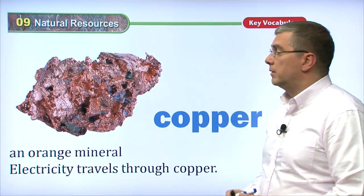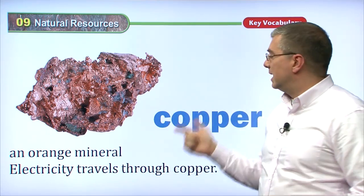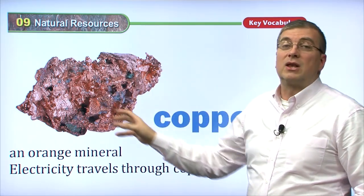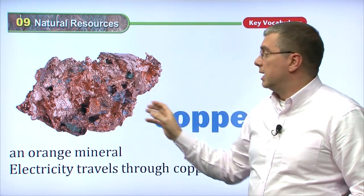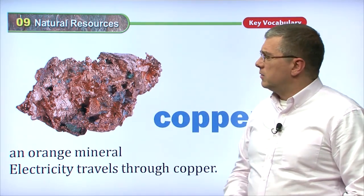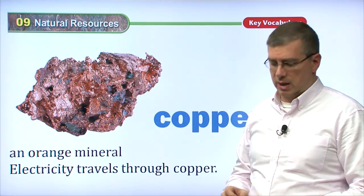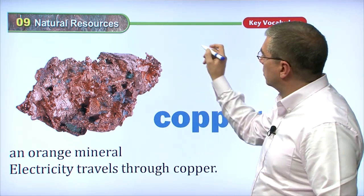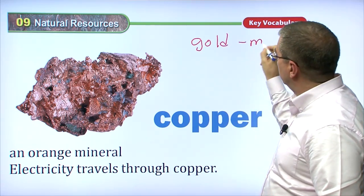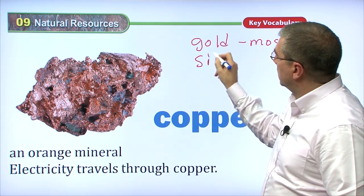Another very common type of mineral, similar in style to gold and silver, is copper. Copper is a lot more common than gold, and copper is an orange mineral. Copper was also used as money — a long time ago they used copper as money too. So comparing these minerals: gold is the most expensive, and then we have silver.